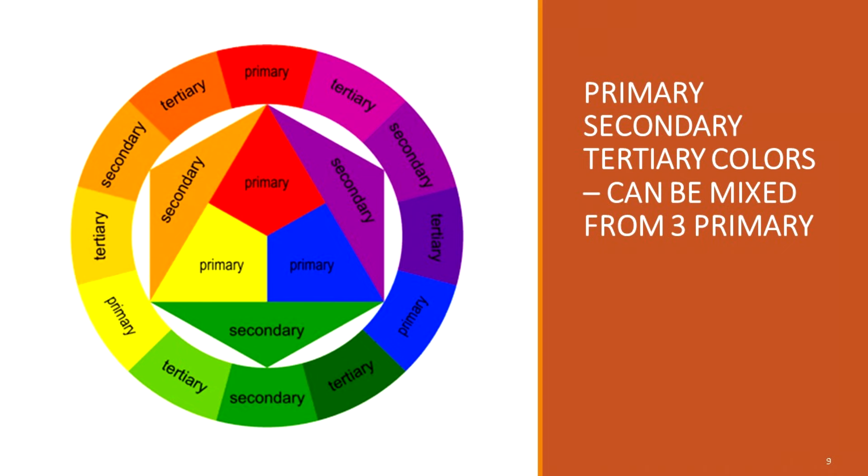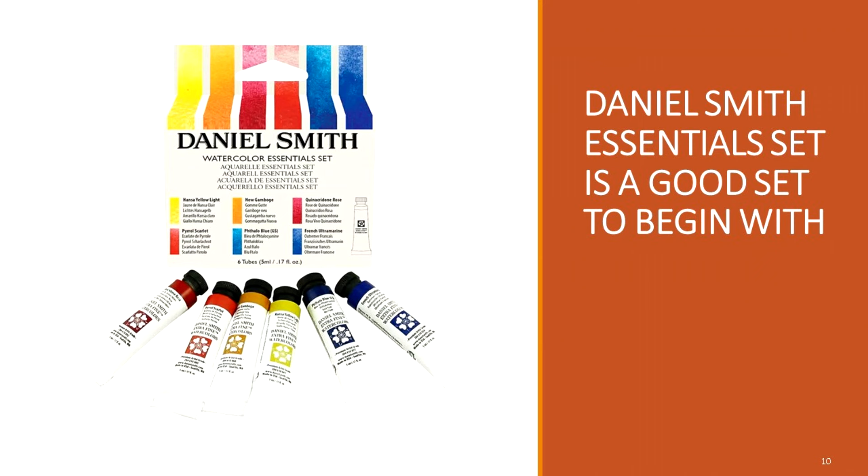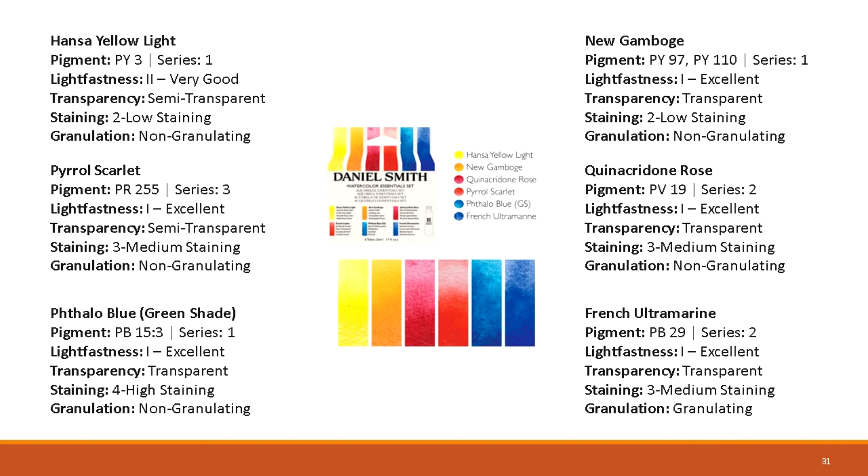The primary colors here are yellow, red and blue. If you mix them, you will get orange out of yellow and red, purple out of red and blue, and green out of yellow and blue. Daniel Smith has a fantastic beginner set, a very good set to start with. It doesn't have black or grey, but it has the three primary colors, each a warm and cool version of each color.